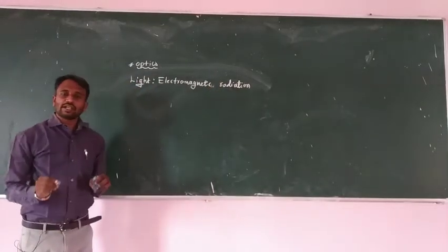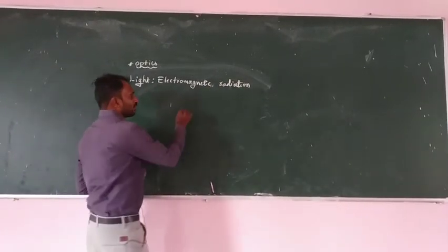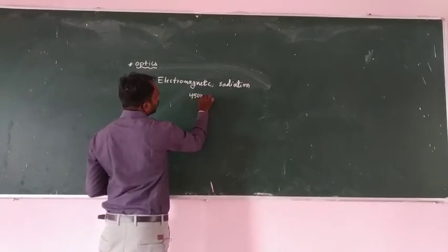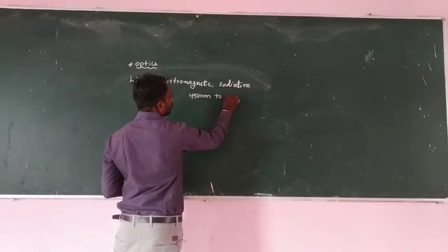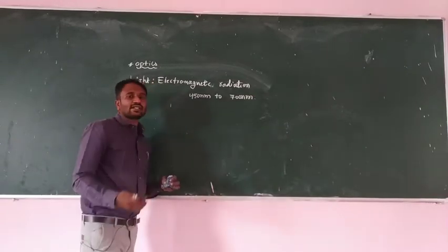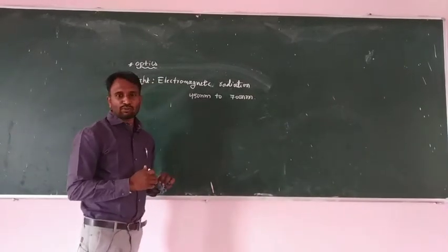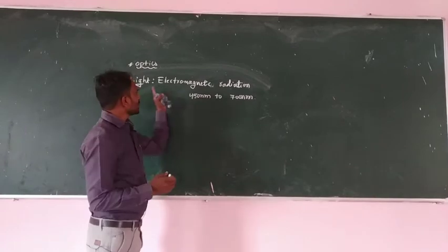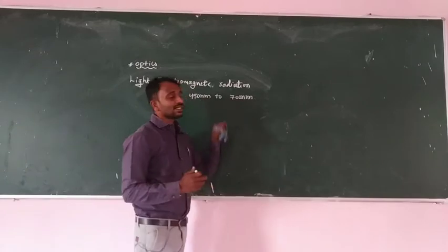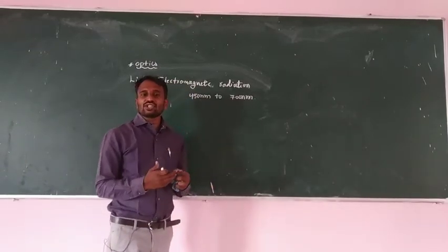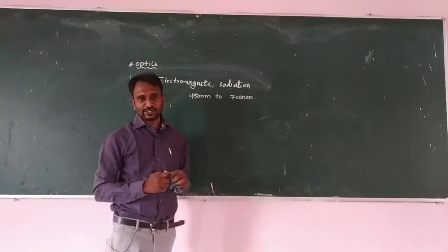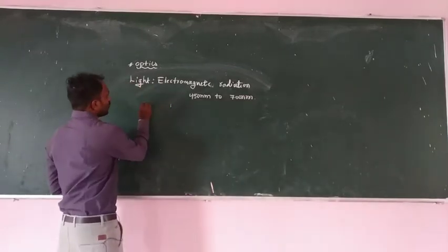Light is electromagnetic radiation with a wavelength of 450 nanometers to 700 nanometers — sometimes we consider 400 nanometers to 750 nanometers. So light is a form of energy and it produces the sensation of our sight.